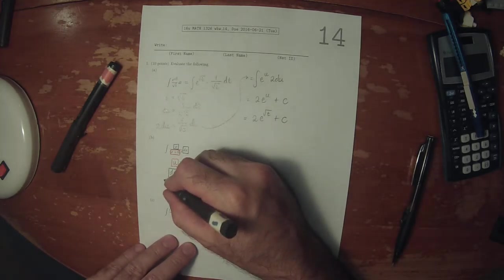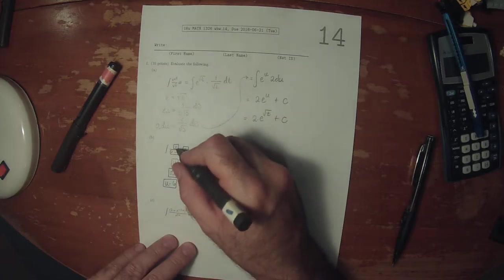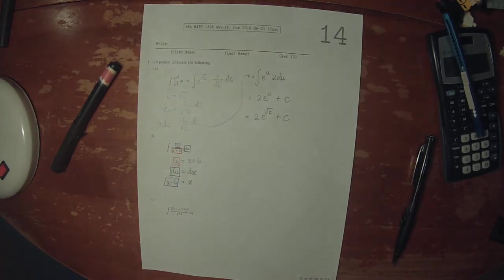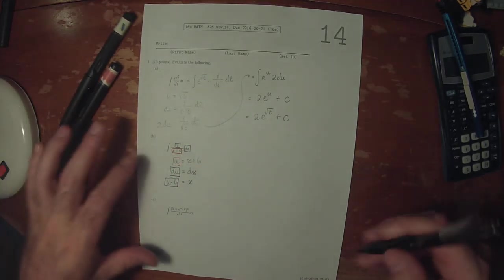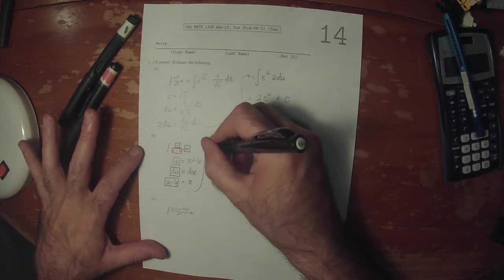So this blue, u minus 6, can cover that blue x. As a result, the new antiderivative is antiderivative u minus 6.